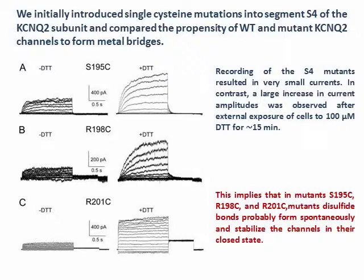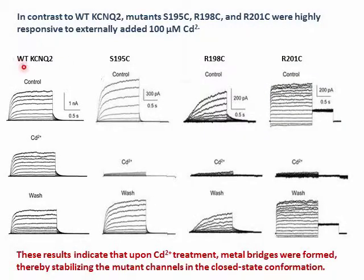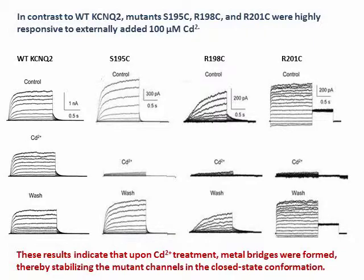To prevent disulfide bond formation, channels were systematically pre-incubated for half an hour in the presence of 100 µM DTT. In contrast to wildtype KCNQ2, S4 mutants were highly responsive to externally added 100 µM cadmium. They showed a dramatic reduction in current amplitude which was reversible upon extensive washout, suggesting strong cadmium coordination. These results indicate that upon cadmium treatment, metal bridges were formed which stabilized the mutant channel in the closed state conformation.